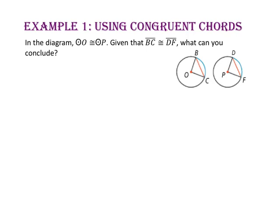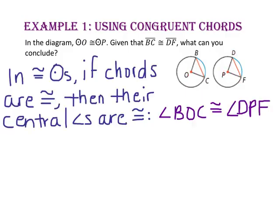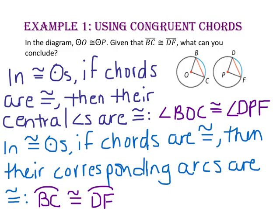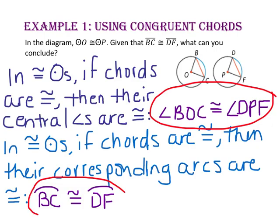In example 1, we will use congruent chords. In the diagram, circle O is congruent to circle P. Given that segment BC is congruent to segment DF, what can you conclude? We know that in congruent circles, if chords are congruent, then the central angles are also congruent. So, angle BOC is congruent to angle DPF. We also know that if the chords are congruent, their corresponding arcs are congruent. So, we can conclude that arc BC is congruent to arc DF.